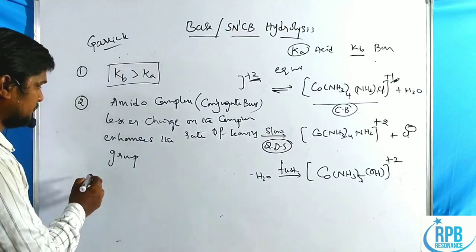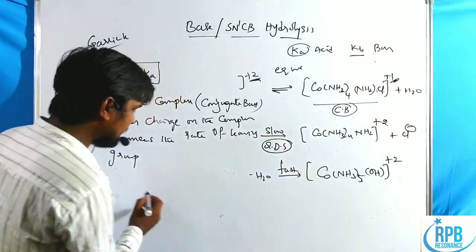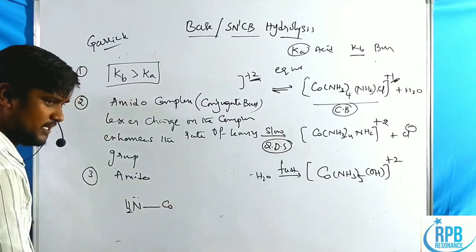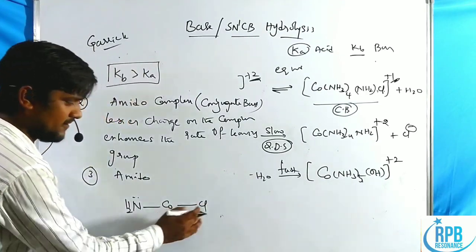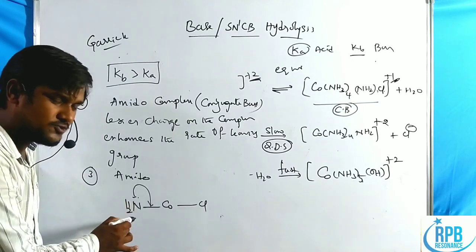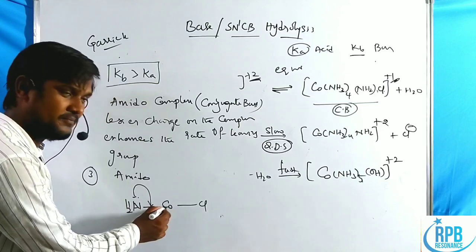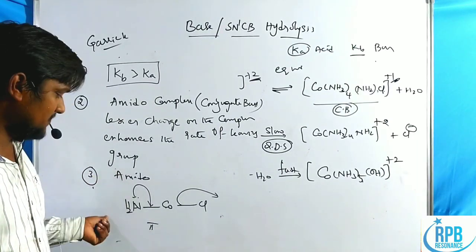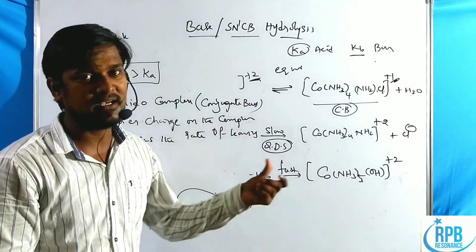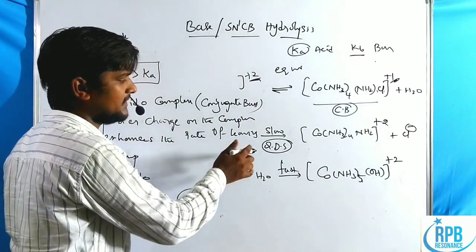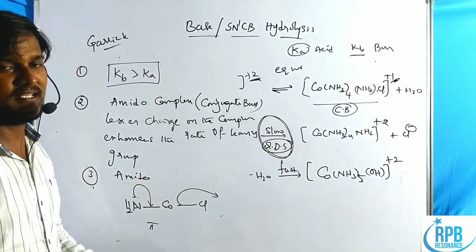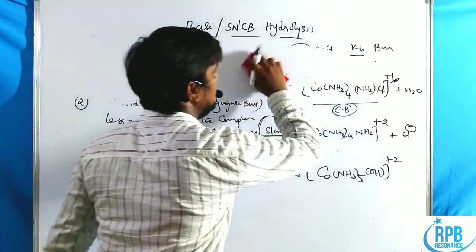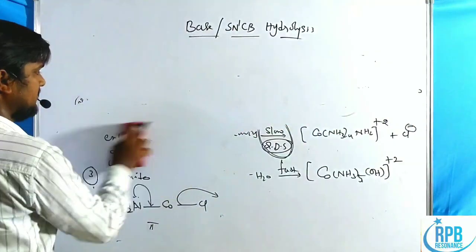Third feature: the imido complex has NH2 with a lone pair of electrons connected to the cobalt. This lone pair forms a pi bond with the metal atom, which promotes elimination of the leaving group. These three factors together confirm the second step as the rate-determining step in the conjugate base dissociative mechanism. Now let us go through the same mechanism in an octahedral structure.